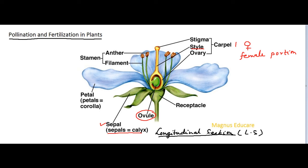In most flowering plants, we also find the male parts, which are innumerable here. They are known as the stamen. In the stamen, the topmost part is the anther, and the stalk below it is known as the filament. From the anther, pollen grains are released — very small, microscopic particles.